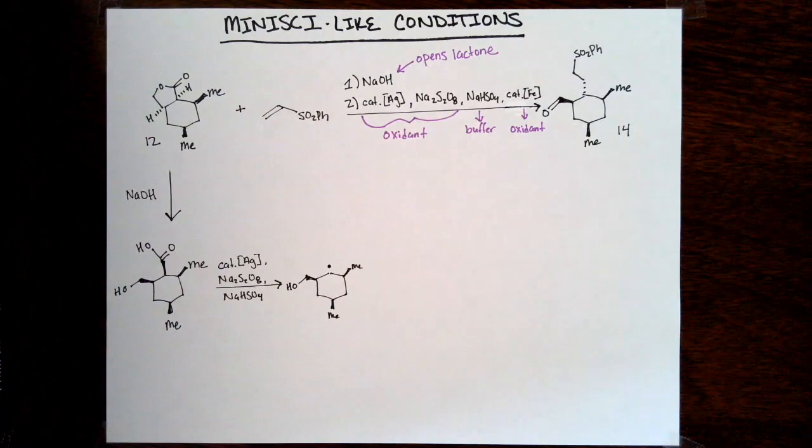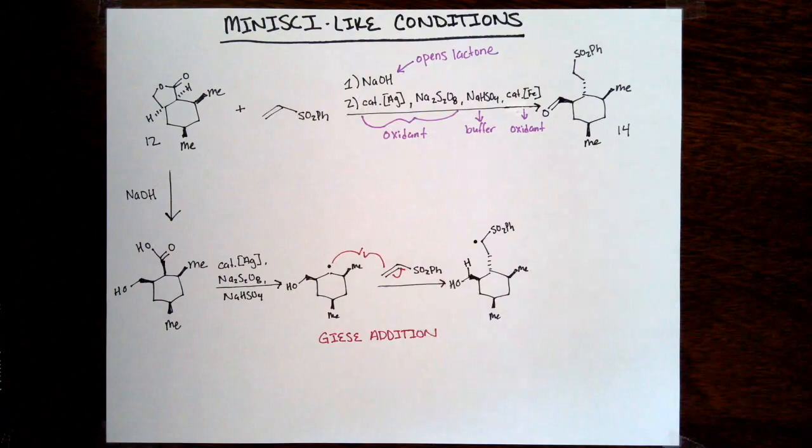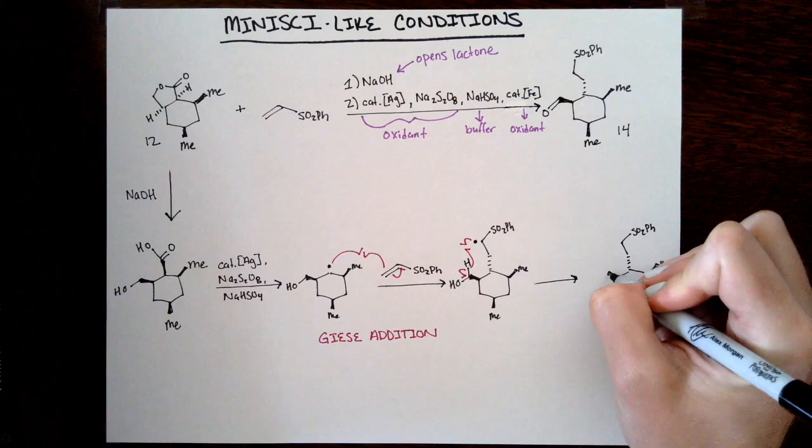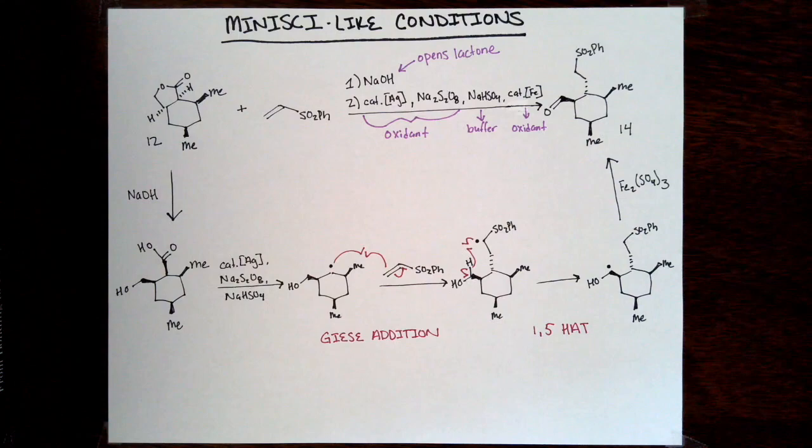They finally settled on Minisci-like conditions, which are the ones shown in the paper. There are a lot of different reagents here, so it would be helpful to explain briefly what each of them is doing. The sodium hydroxide is doing that initial saponification of the lactone to reveal the carboxylic acid. The silver is then oxidizing that carboxylic acid, and after a decarboxylation a carbon-centered radical is revealed.